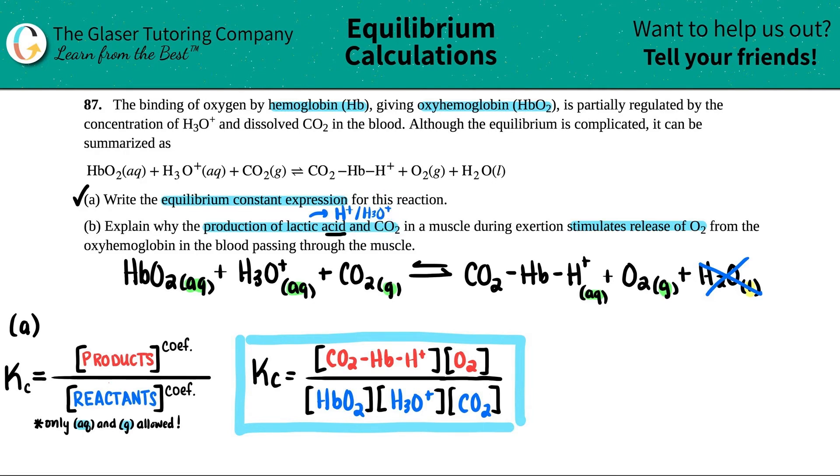So this lactic acid is going to be producing H3O+ and CO2. Here are the two things in the balanced equation, H3O+ and CO2. And we know that this will be increasing, that's what they said, production of lactic acid.